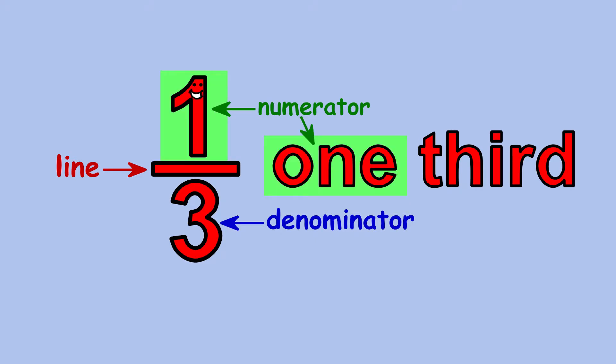The first part of my name is just the name of the number that's my numerator, 1. And the last part of my name comes from my denominator. When the number 3 is written below the line, you say 3rd instead of 3.